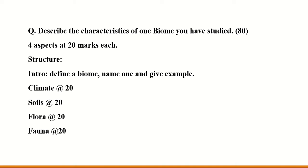You can see the structure here. You have an intro where you define what a biome is, name a biome, and then give an example of where it can be found. I have no marks beside the intro, but you will get marks for it. I've also included paragraphs on climate, soils, flora and fauna — flora and fauna means plants and animals — and there's 20 marks for each. You have more than enough to get 80 marks and beyond in this sample answer we're going to go through today.